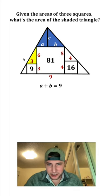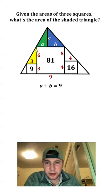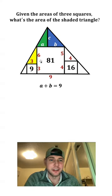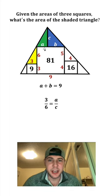Next, let's look at this yellow triangle right here and this green triangle right here. Since they both have a right angle, and these two angles are equal here by corresponding angles, these two triangles are similar. So we can say 3 over 6 is equal to A over C.